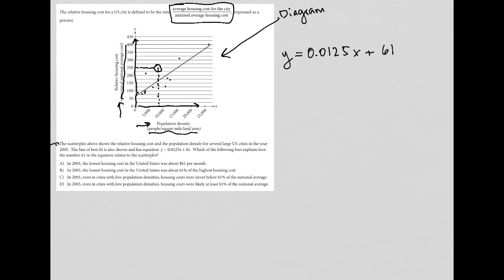Which of the following best explains how the number 61 in the equation relates to the scatter plot? First, the number 61 in this equation—this is in y = mx + b form. I always pay attention to that because it's typically important. B represents the y-intercept, which means 61 represents the y-intercept. Our y-axis is relative housing cost as a percent of national average cost.